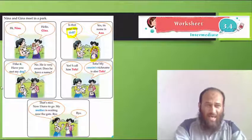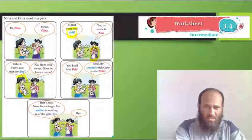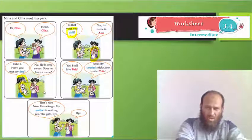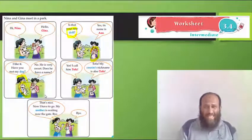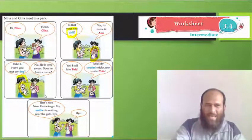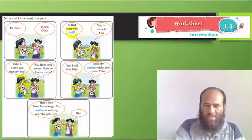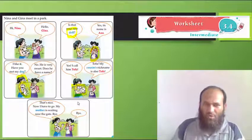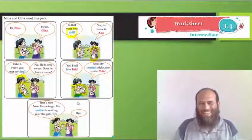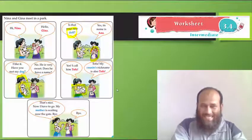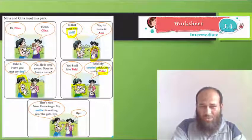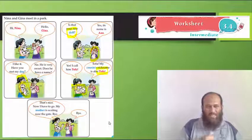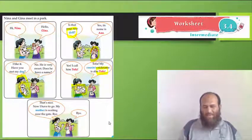I like it. I have my dog with me. So, here is the dog with Gina. He is very sweet. Does he have a name? Yes. I call him Tofu. So, what is the name of this puppy, this small dog? It's Tofu. My cousin's name is also Tofu. That's nice. Now, I have to go. My mother is waiting near the gate. Bye.